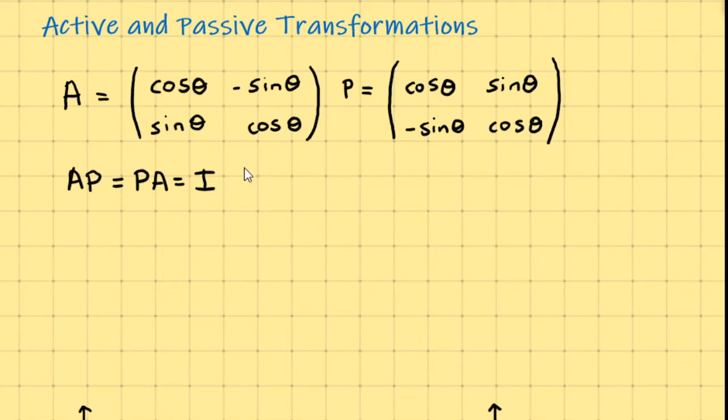We showed that before, and it's easy to prove. If you put these two matrices together and go through the matrix multiplication, you will get the identity. So that's what we expect.